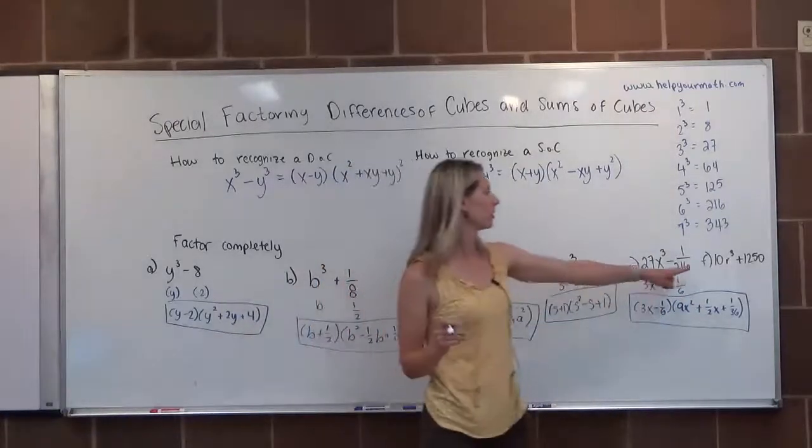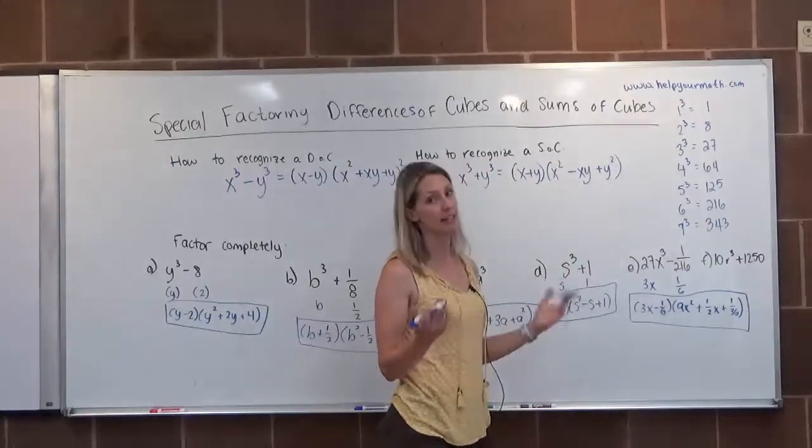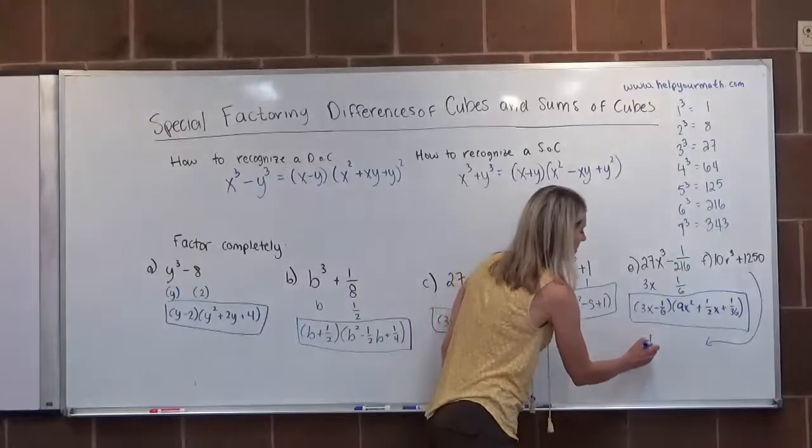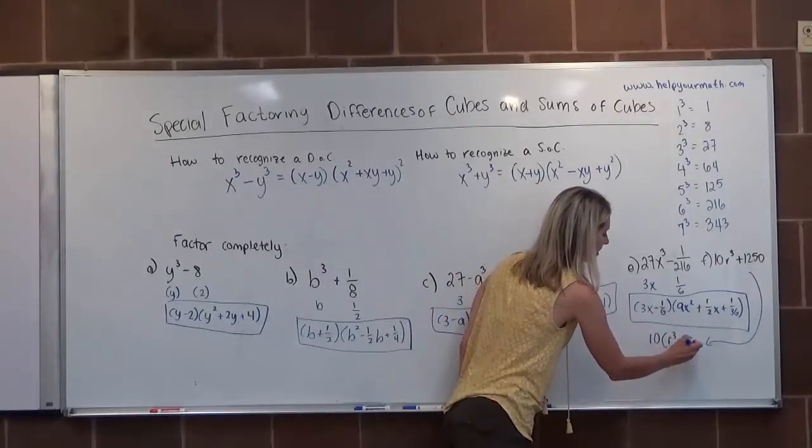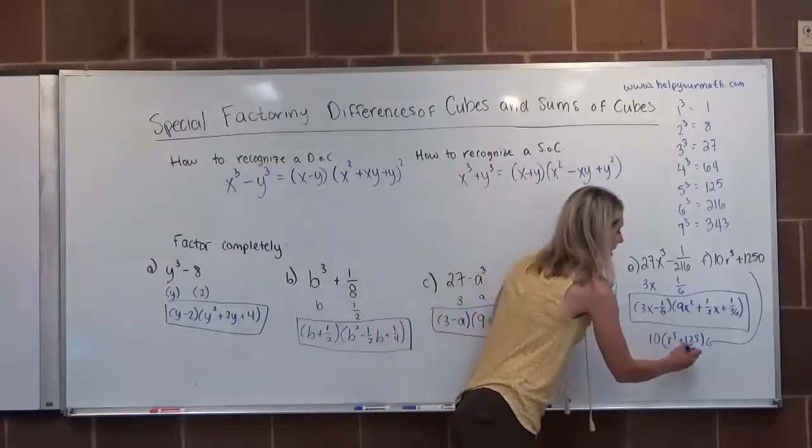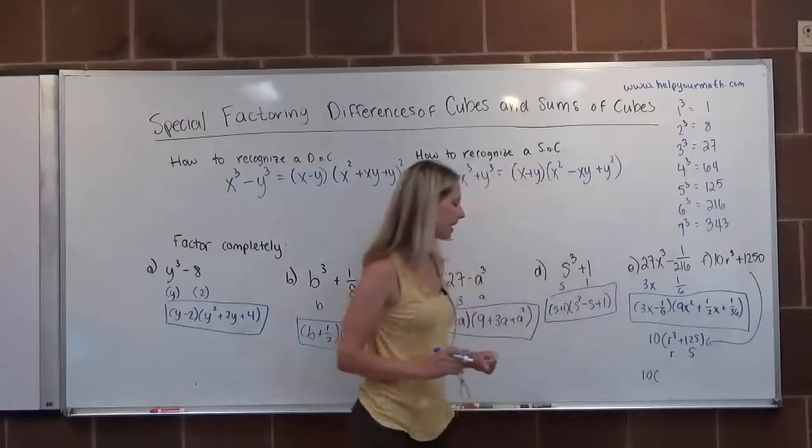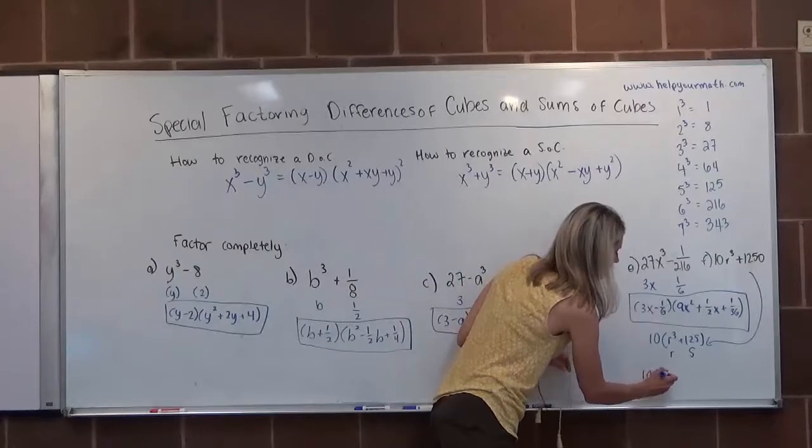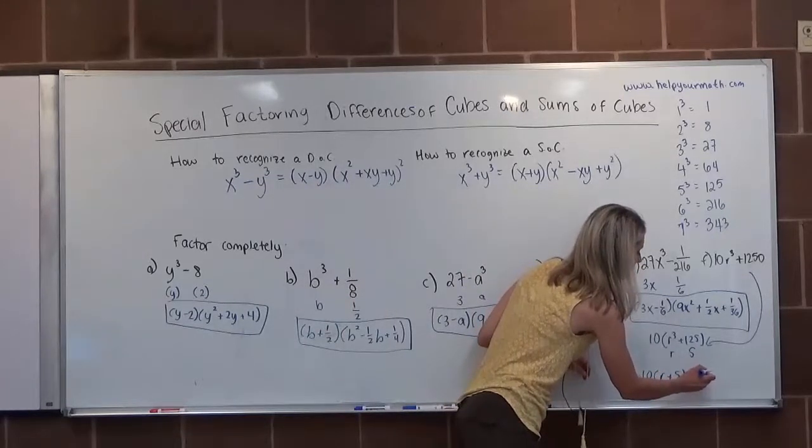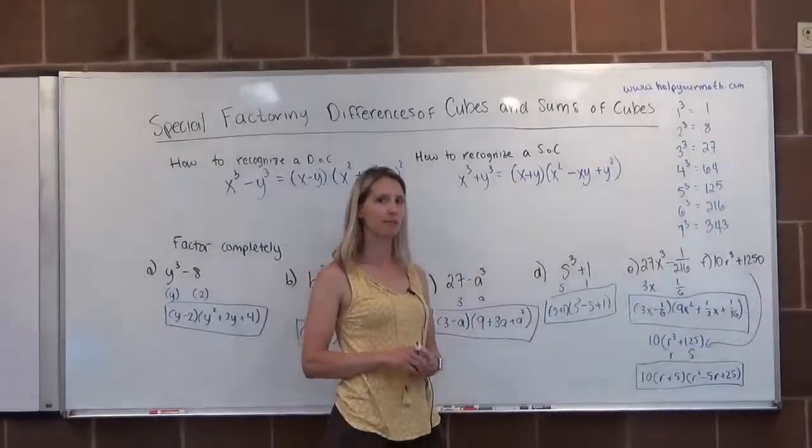Letter F, we have 10R cubed plus 1,250. Wait a minute, 10 is not a perfect cube. But we always need to check, is there a GCF? 10 and 1,250 are both divisible by 10. So the first thing we want to do is factor out the 10. That would give me 10(R³ + 125). Now within the parentheses, R cubed is a perfect cube, its root is R. 125 is a perfect cube, its root is 5. This is addition, so this would be the sum of cubes. We have 10(R + 5)(R² - 5R + 25). This would be the final factoring, don't forget that 10 for letter F.